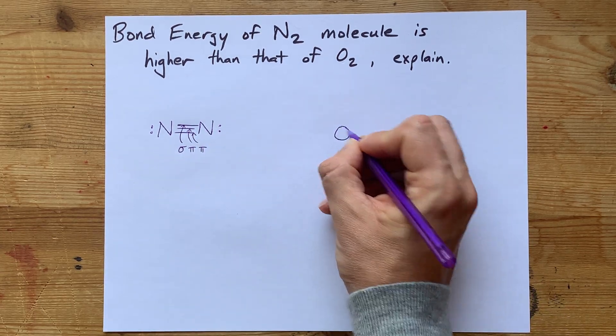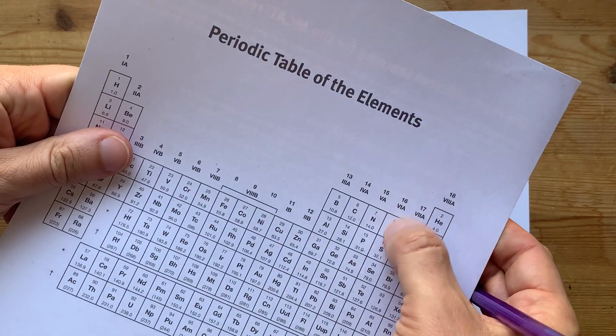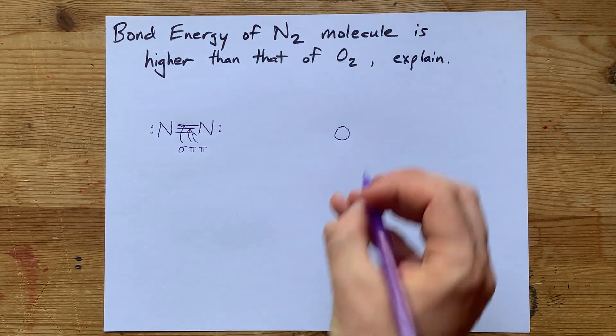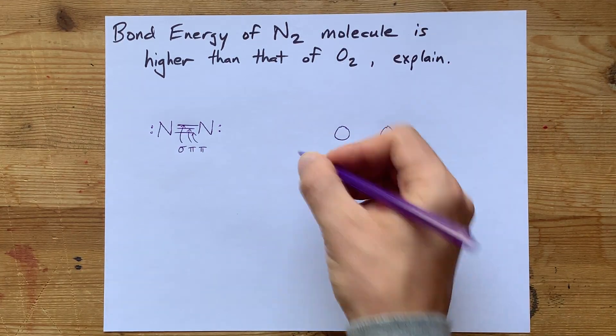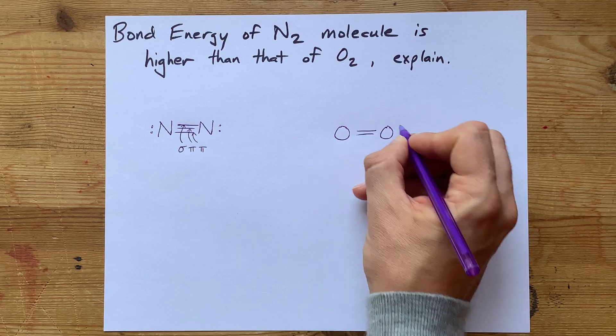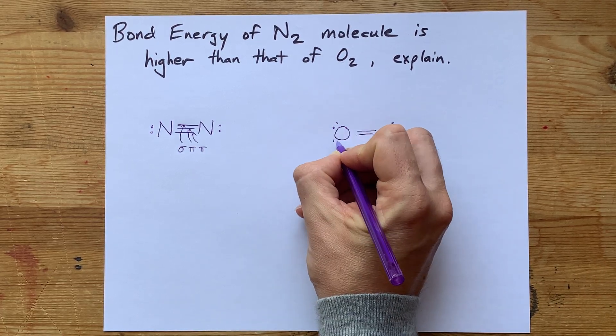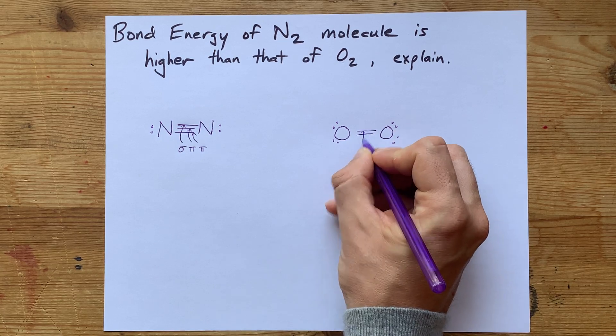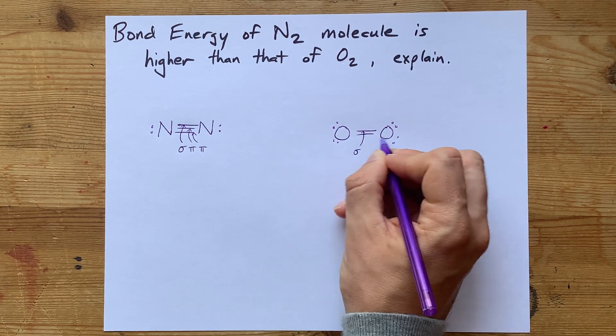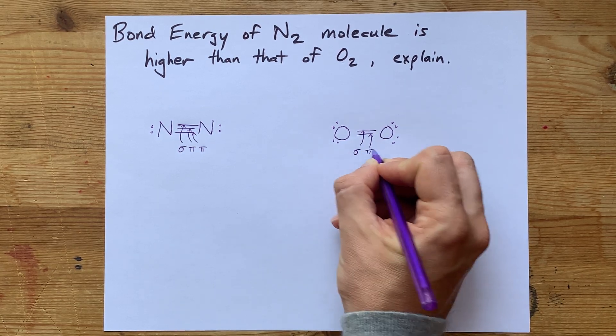Now for oxygen, each oxygen brings six valence electrons. That means it has 12 valence electrons total, and the way you get those to bond together is with a double bond. Here, the oxygen has a sigma bond between the two and a single pi bond.